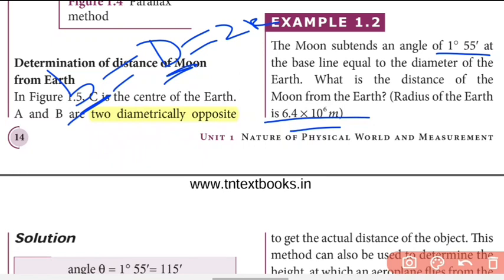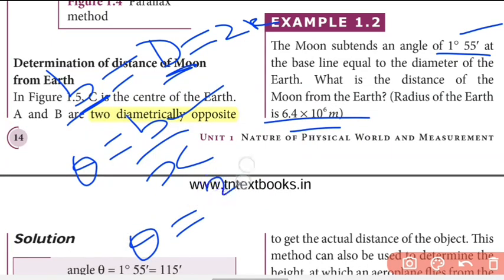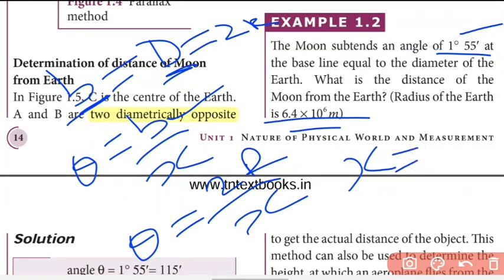We use the formula for the distance between the Moon and Earth. The formula is theta equals b divided by x. The base b is equal to 2r, so theta equals 2r divided by x. Therefore, the distance between the Moon and Earth x is equal to 2r divided by theta.